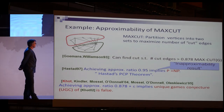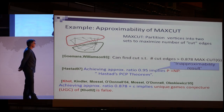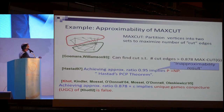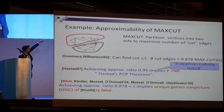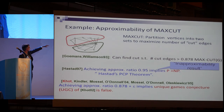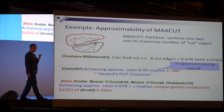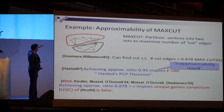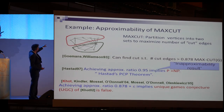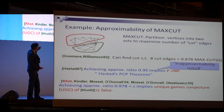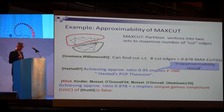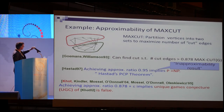Then a result of Khot, Kindler, Mossel, and O'Donnell, using a related result of Mossel, O'Donnell, and Oleszkiewicz, showed that achieving approximation ratio 0.878 plus epsilon for any epsilon — just a little better than the Goemans-Williamson algorithm — implies that the unique games conjecture of Khot is false. This is just a phenomenal result, because it also explains in a very novel way where that 0.878 came from.